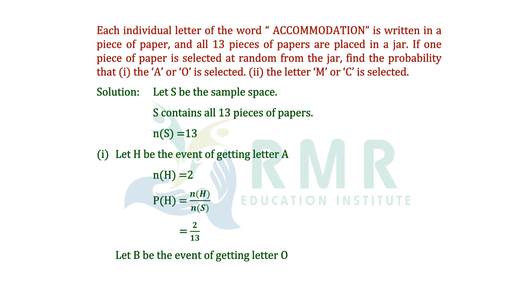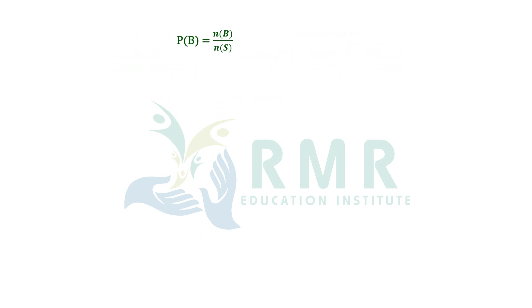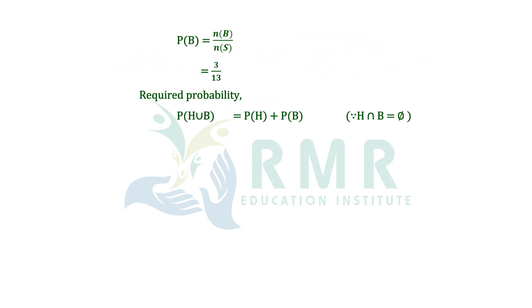Let B be the event of getting the letter O. So N(B) = 3. Probability of B = N(B) / N(S), that is 3/13. Then the required probability: P(H ∪ B) = P(H) + P(B), that is 2/13 + 3/13. After simplifying, we get 5/13.